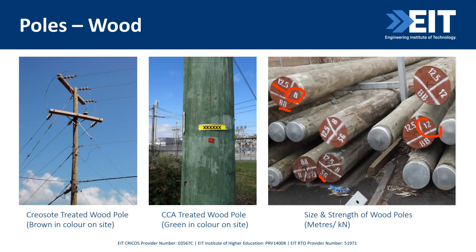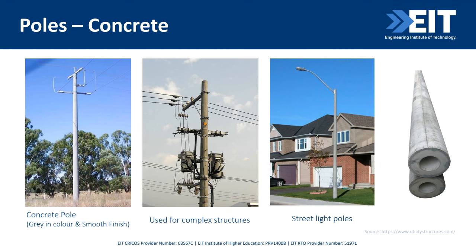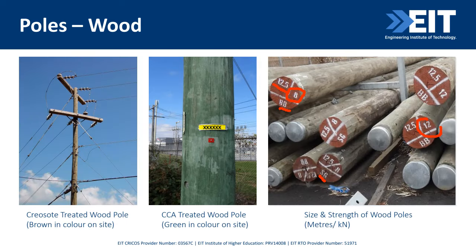Another type of pole is concrete, which is the second most common. They look gray in color with a smooth finish. They have a steel mesh inside and can handle heavier load and complex structures. Some utilities also use pole numbers on each pole as a reference for their GIS system.